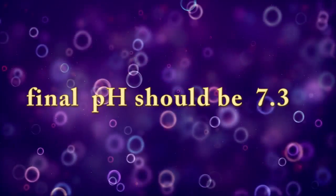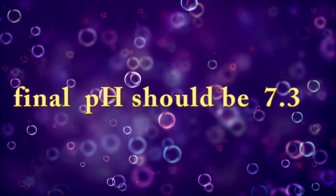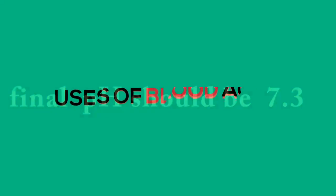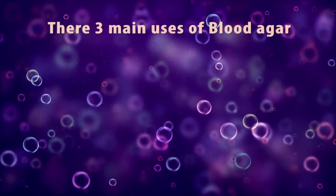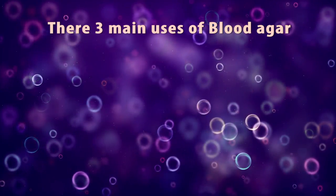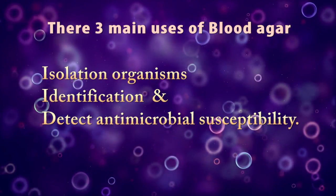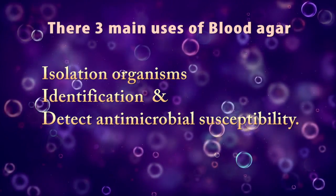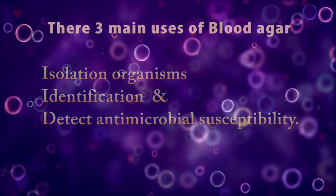Combined with 5% sheep blood, the final pH should be 7.3. Uses of Blood Agar Media: There are three main uses of blood agar — isolation of organisms, identification, and detection of antimicrobial susceptibility.